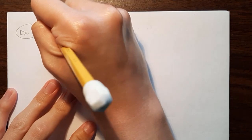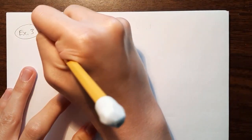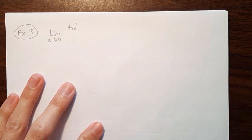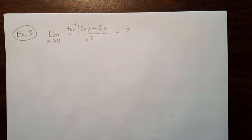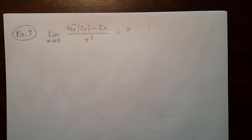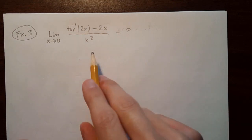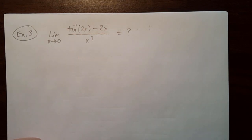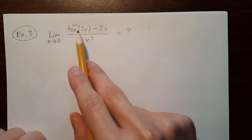Taylor series can help us evaluate some complicated limits. For example, we're going to find the limit as x goes to zero of arctangent of 2x minus 2x, divided by x cubed. You might be able to get away with this using L'Hôpital's rule, but we're going to tackle it with series. It would be essential if you forgot the derivative of arctan but remembered the Taylor series expansion for arctan.